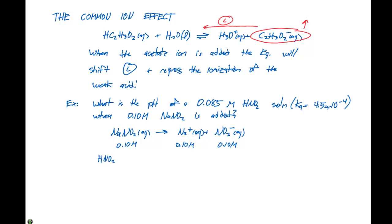The equilibrium we're looking at is HNO2 in equilibrium with H+ plus NO2-. When we look at an ICE table, our concentration of NO2- is 0.10, and for a 0.085 molar HNO2 solution, we're starting with 0.085 HNO2. Initially, we don't have any H+ present.